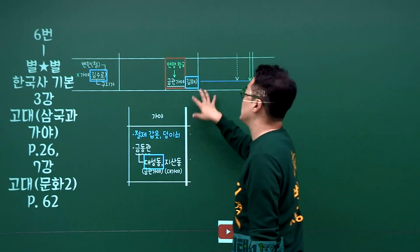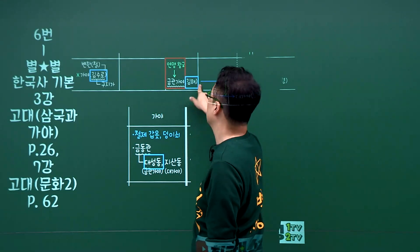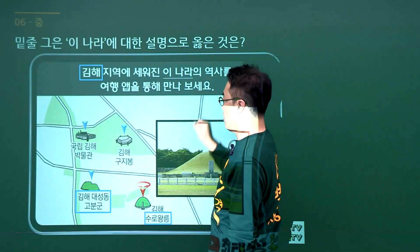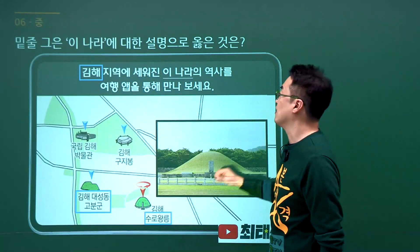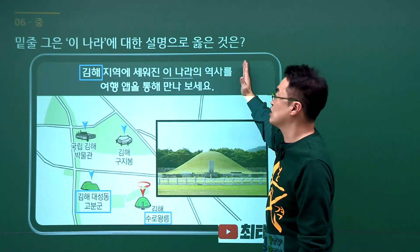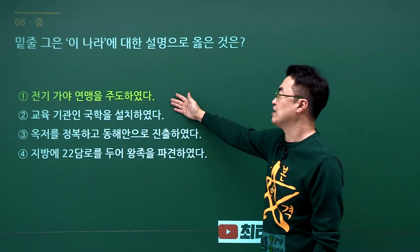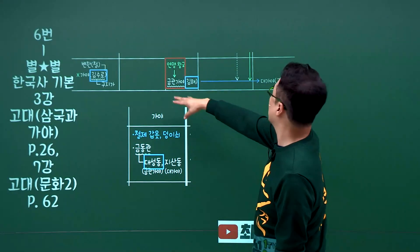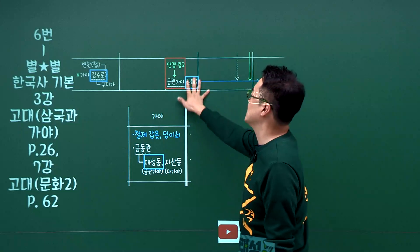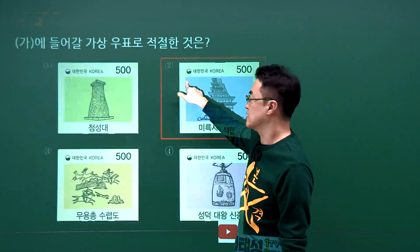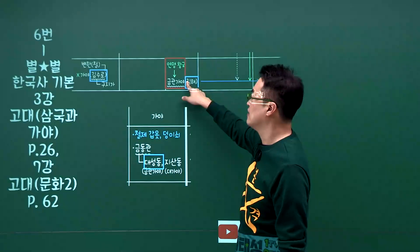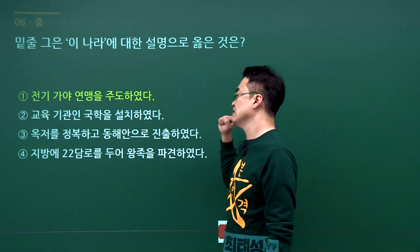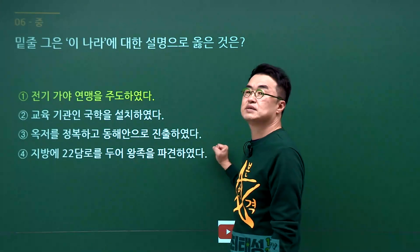금관가야 문제입니다. 김해, 김수로, 대성동을 배웠습니다. 문제에서 김해와 수로왕이 나왔으니 금관가야입니다. 금관가야에 대한 설명으로 전기 가야연맹을 주도하였다가 정답으로 1번입니다. 국학은 통일신라, 옥저 정복은 고구려, 22담로는 백제입니다.